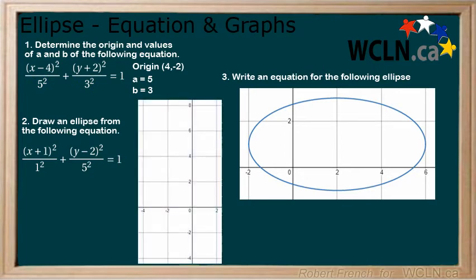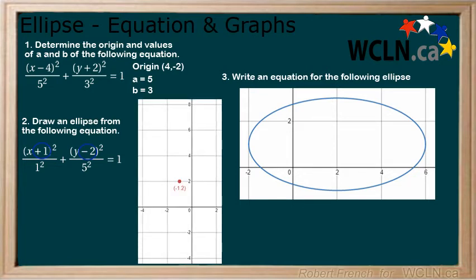Next, draw an ellipse from the following equation. Looking at the equation, we can see that the origin of the ellipse is at negative 1, 2, and we can draw a point for this.